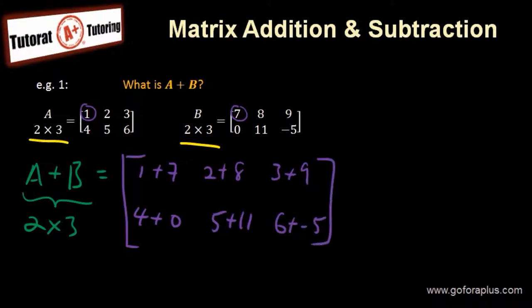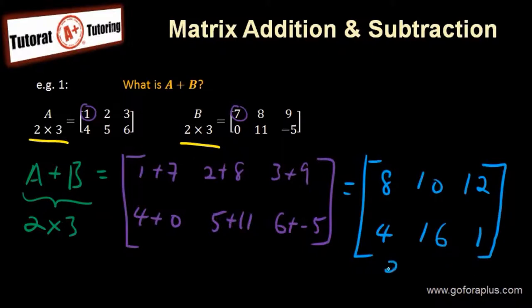Okay, now we'll get the answer by adding each element. So 8, 10, 12, 4, and 16, and also you have 1. So this is a 2 by 3 matrix. This is how you do matrix addition.